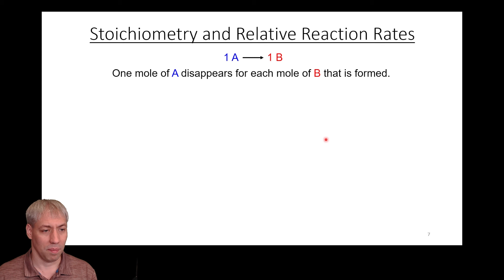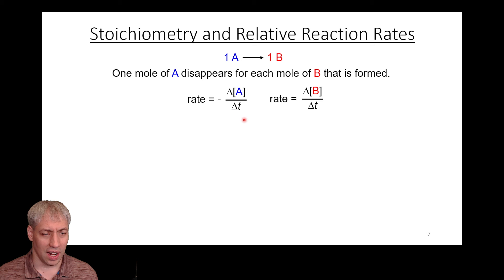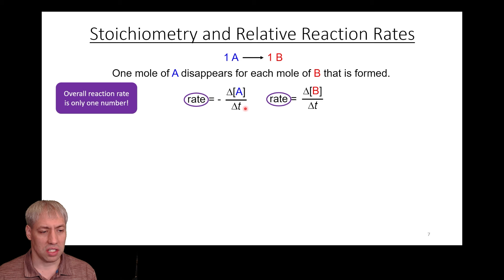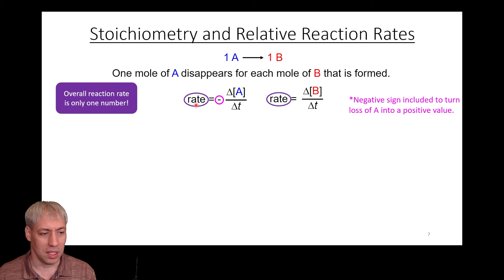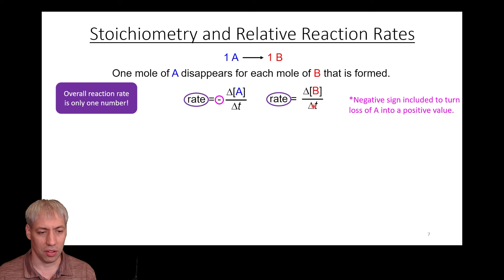For the reaction A → B, one mole of A disappears and one mole of B is formed. The overall rate equals negative delta[A]/delta t equals delta[B]/delta t. The negative sign is needed because delta[A]/delta t is negative, and multiplying by negative turns it into a positive value so the overall rate stays the same. The rate of individual species uses that sign convention: negative for disappearing, positive for appearing.